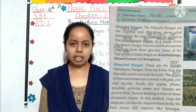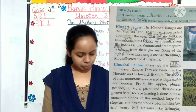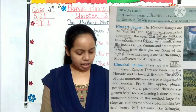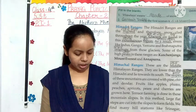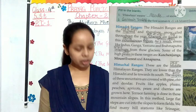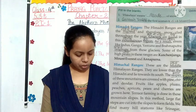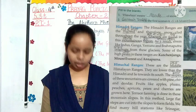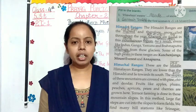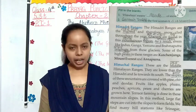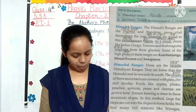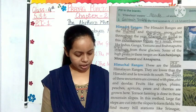Next is the Himachal range. These are the middle Himalaya range, lower than the Himadri and lying towards its south. The slopes of these mountains are covered with pine, chir and deodar forests. Fruits like apple, plum, peach, apricot, pears and cherries are grown here.